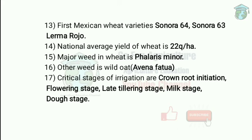The critical stages of irrigation for wheat are: CRI stage (crown root initiation, around 22 days after sowing), late tillering stage, flowering stage (around 90 days after sowing), milk stage, and dough stage. If a farmer has water for only one irrigation, apply at CRI stage. For two irrigations, apply at CRI and boot stage. For three irrigations, apply at CRI stage, boot stage, and milk stage.